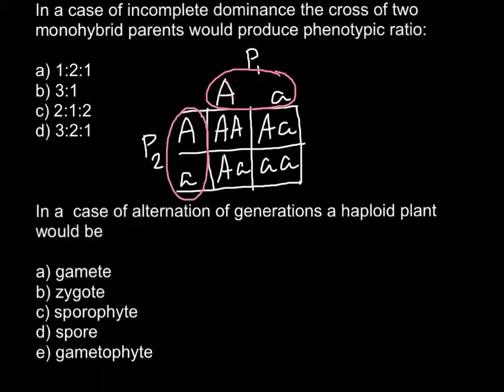because capital A is incompletely dominant over the recessive allele, the color of the flowers wouldn't be red but would be some intermediate color, like pink color.